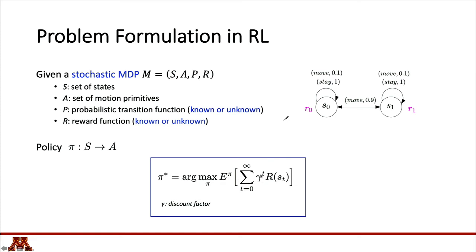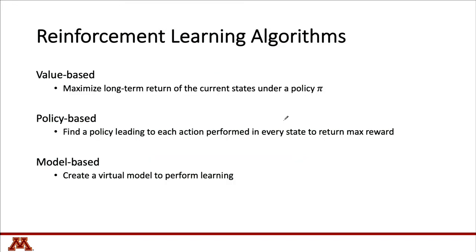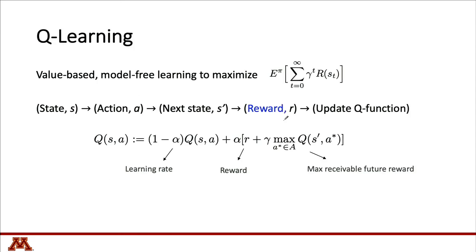If the discount factor is 1, we take into account current and future rewards. If it is 0, it is a greedy approach. In the literature, reinforcement learning algorithms can be categorized as value-based, policy-based, or model-based. Today I focus on Q-learning, which is a value-based, model-free algorithm. It updates Q functions — the value functions — based on observed transitions and rewards.